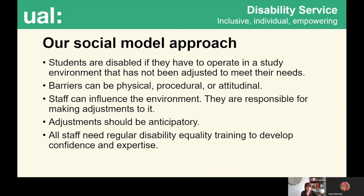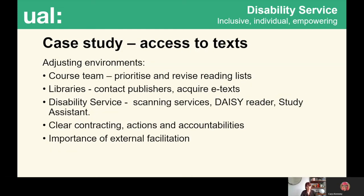Everyone who works within the university has control and influence over their bit of the university environment. They are responsible for making adjustments to it, and the adjustments that we make should where possible be anticipatory, not individual reactions to individual students' needs. All staff — including disability practitioners and support workers — need regular training about the social model to develop confidence and expertise. It's a discipline that needs to be maintained through regular reflection, commitment to action, review, and further improvement.